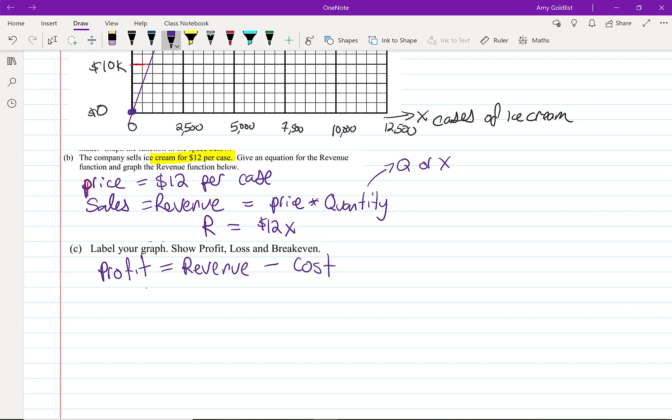Profit is revenue or sales minus cost. When profit is greater than zero, we're in a profit situation. When profit is less than zero, we're in a loss situation. And when profit is exactly zero, this is what we call the breakeven point.